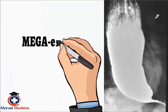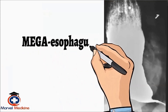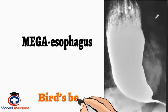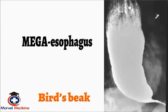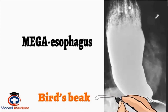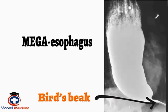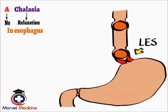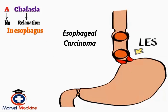This dilated esophagus, which can be called megaesophagus, appears as a bird's beak on barium swallow. Accumulated foods will cause inflammation of the esophagus, which predisposes to esophageal carcinoma.